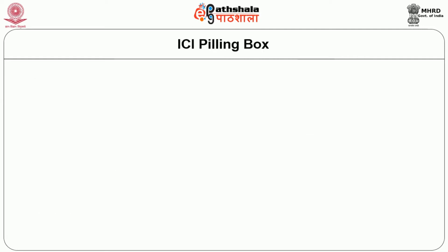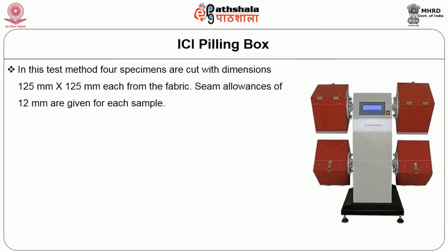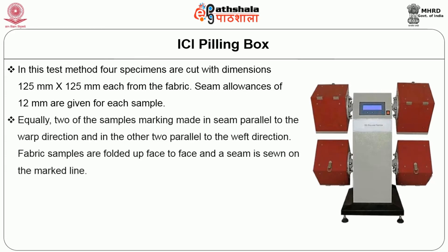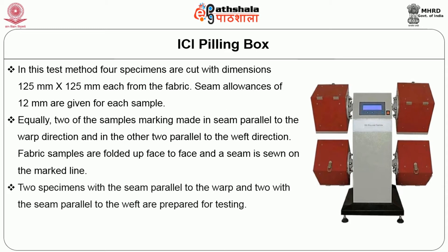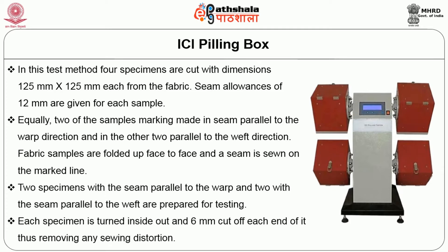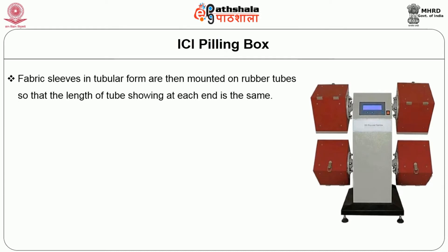The test method used for pilling evaluation is the ICI pilling box method. In this method, four specimens are cut with dimensions 125 mm x 125 mm. Seam allowances of 12 mm are given for each sample. Two of the samples have seams parallel to the weft direction and two have seams parallel to the warp direction. Fabric samples are folded face to face and a seam is sewn on the marked line, giving two specimens with seam parallel to warp and two parallel to weft. Each specimen is turned inside out and 6 mm is cut off each end, removing any sewing distortion. Fabric sleeves in tubular form are then mounted on rubber tubes so that the length of tube showing at each end is the same.